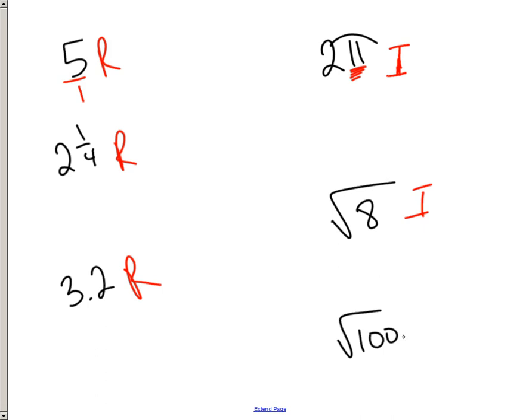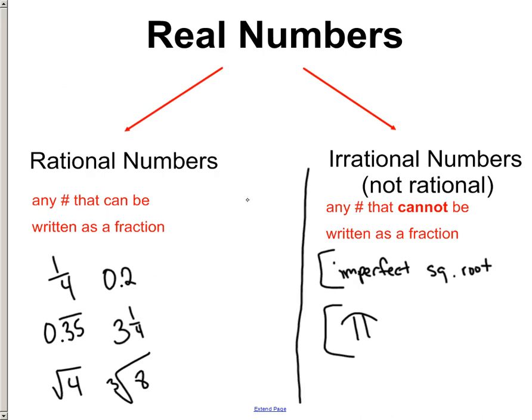This one, my answer is 10, and I can make that into a fraction. So this is rational. So that's what we do when we're just divvying up these numbers into two different groups. It's either going to be rational or irrational. Rational numbers can be made into a fraction. Irrational can't be made into a fraction. Here's the two different types, imperfect square roots or cube roots and pi. Anytime you see pi involved, it's irrational.